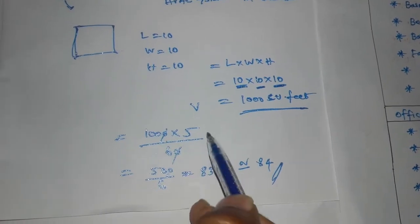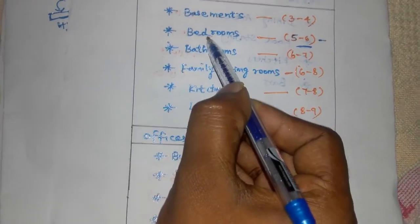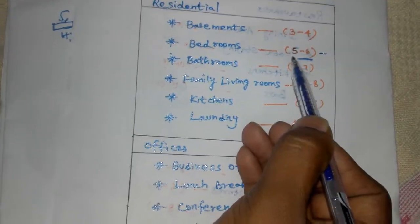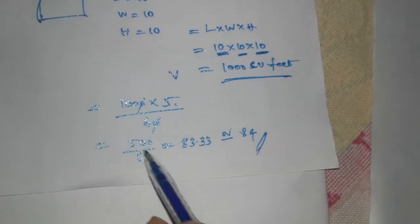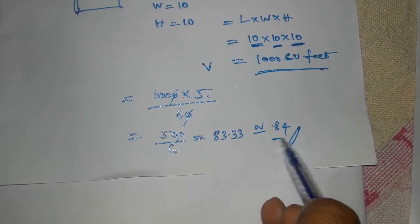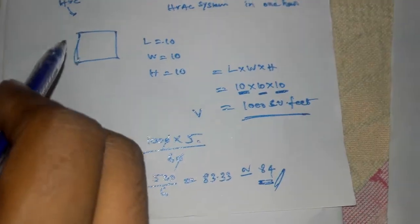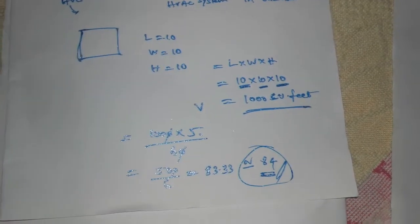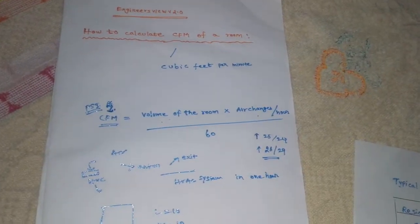The volume of the room is 1000 cubic feet. Air changes per hour is taken as 5, since we are considering a bedroom which requires 5 to 6 air changes per hour — we take the minimum value of 5. Using the formula: CFM equals 1000 times 5 divided by 60, which equals 83.33, approximately 84 CFM. So for a 10 by 10 by 10 foot bedroom, only 84 CFM is required.